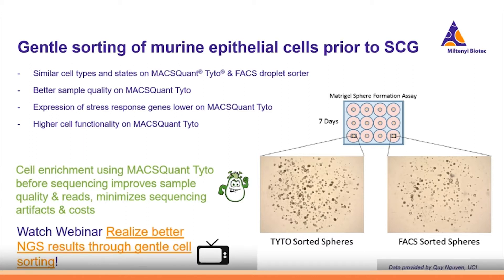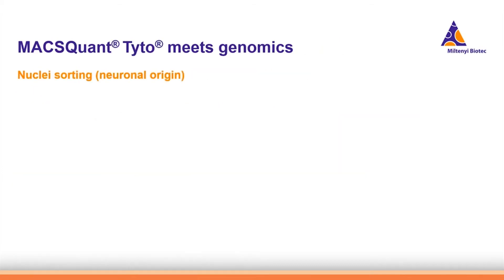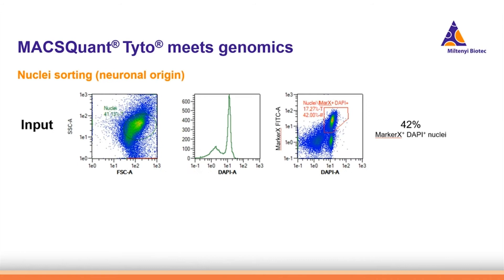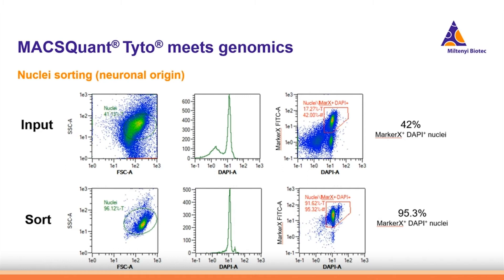Last year there was a webinar on exactly that topic — if you are interested, have a look at it. Nuclei sorting is becoming more and more important in genomics workflows. We tested whether this is possible on the MACSQuant Tyto. A nuclear marker was used together with DAPI to stain for the nuclei, and after sorting, a purity of above 95% was observed.